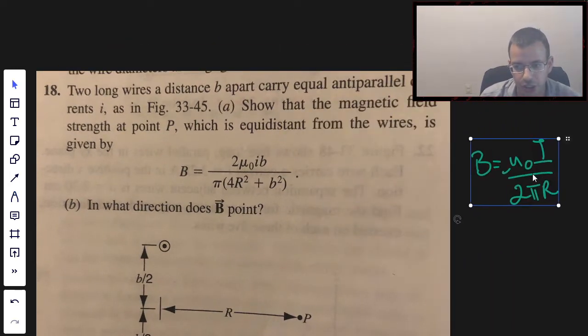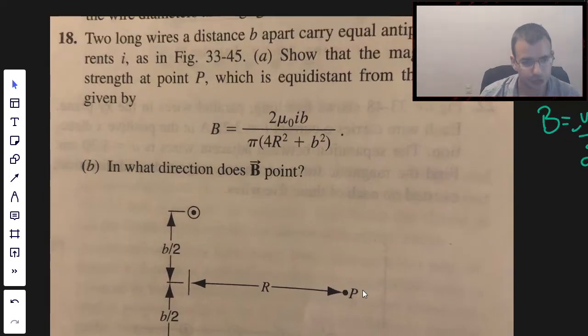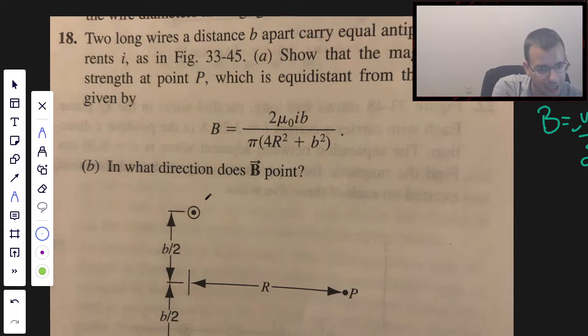For the direction, we do a right-hand rule. You place your thumb in the direction of the current, in this case out of the page, and you wrap your fingers, and it's going to be a circle going in the counterclockwise direction for the top one. I'll call this top one 1. For the bottom one, it's going to be into the page, wrap your fingers, and so it's going to be going clockwise.